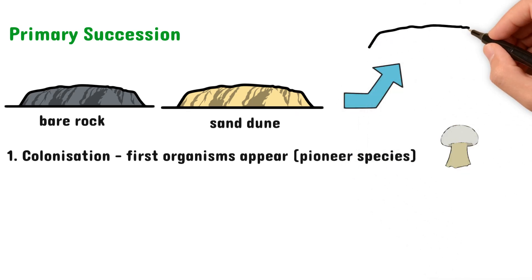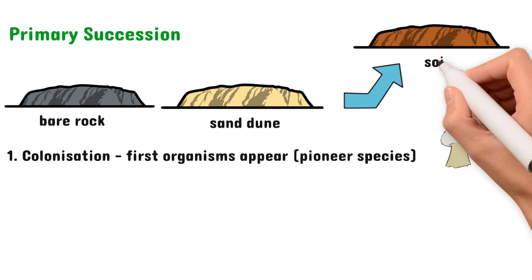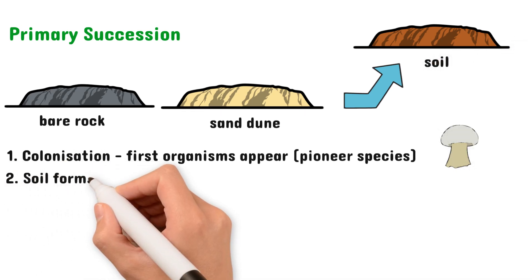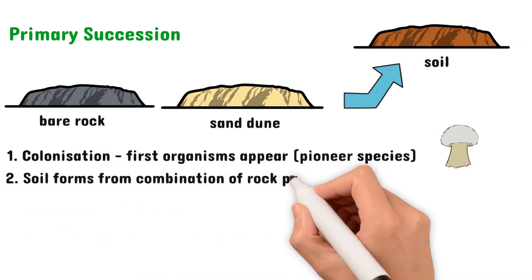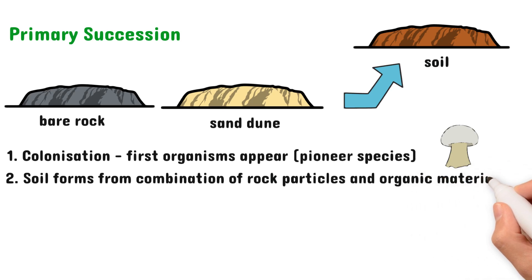The second stage is the formation of soil. So over time, the rock particles and organic material from dead pioneer species will combine and form a soil, which can support a more complex life.